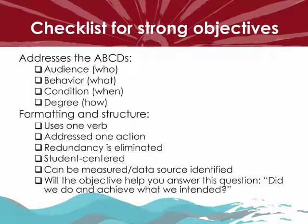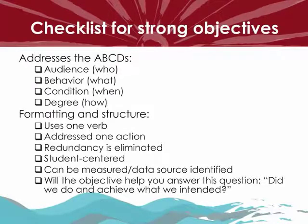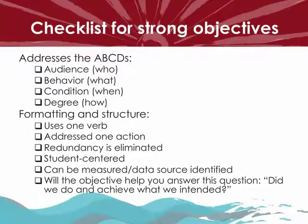As a recap, when writing strong objectives, here's a checklist: make sure the objective addresses Audience (who), Behavior (what), Condition (when), and Degree (how). In addition, check that the formatting is correct, it uses one verb, it addresses one action, you've eliminated redundancy, it's student-centered and measurable, and the data source is identified. Finally, ask yourself: will this objective help you answer — did you do and achieve what was intended?